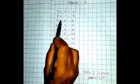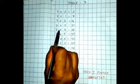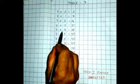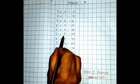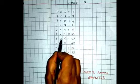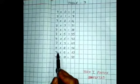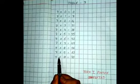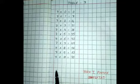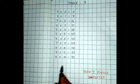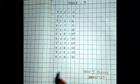Now table 7. 7 zeros are 0, 7 ones are 7, 7 twos are 14, 7 threes are 21, 7 fours are 28, 7 fives are 35, 7 sixes are 42, 7 sevens are 49, 7 eights are 56, 7 nines are 63, 7 tens are 70.